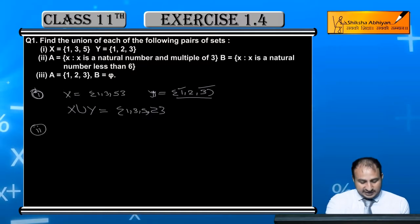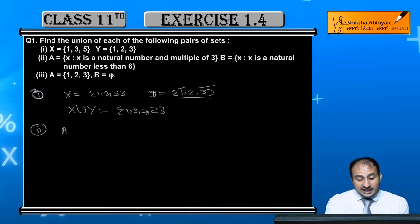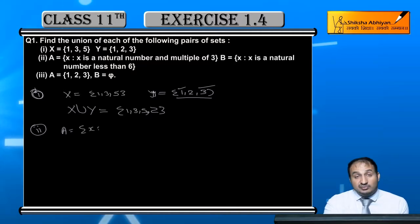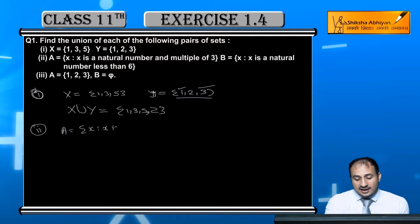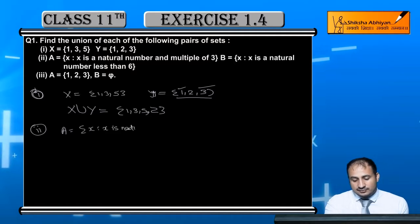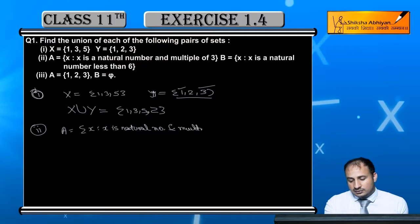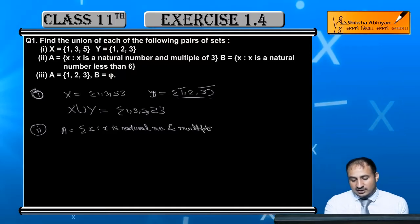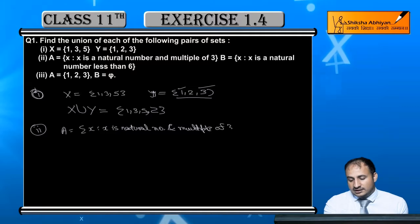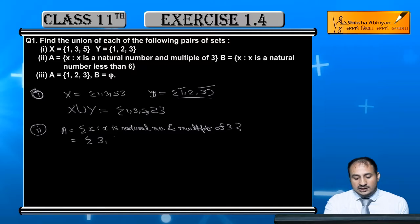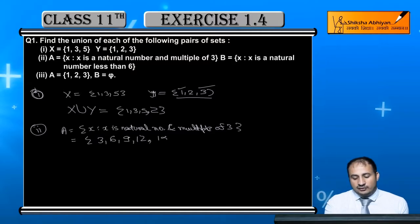Now for the second pair, Set A is defined as: x where x is a natural number and a multiple of 3. So in roster form, A = {3, 6, 9, 12, 15, ...} and so on.